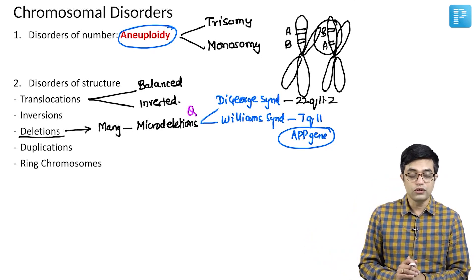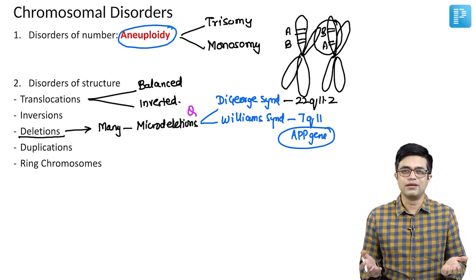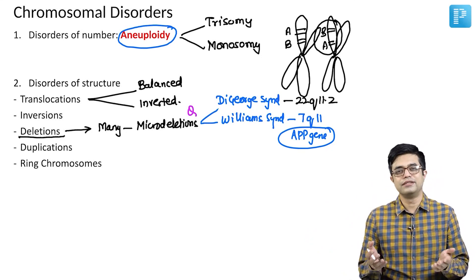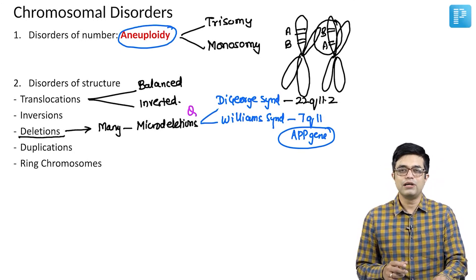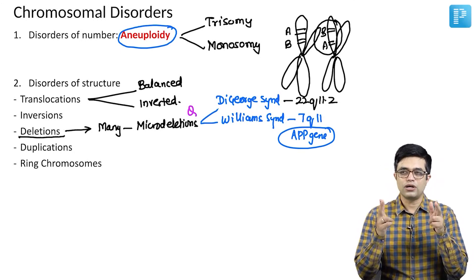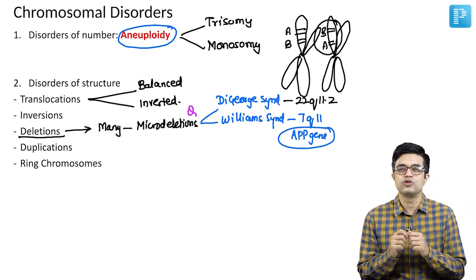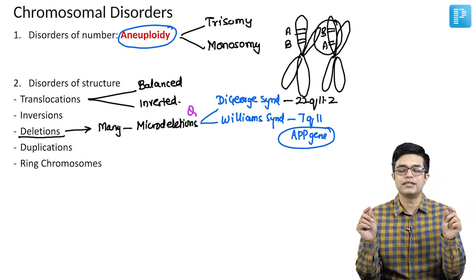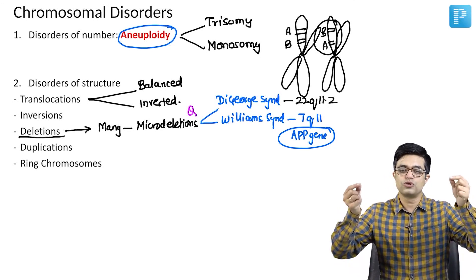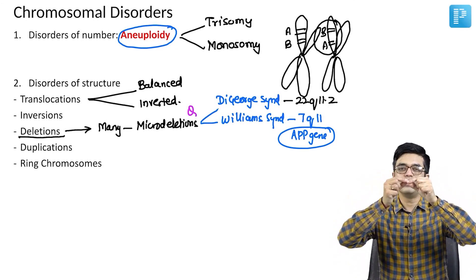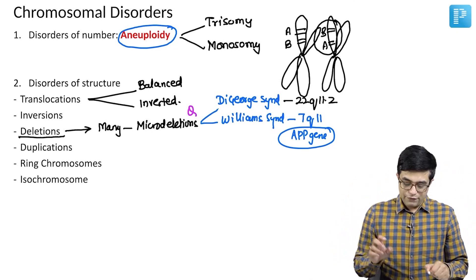Moving to ring chromosomes. As the name says, they are shaped like a ring. Whenever there is cutting of a chromosome or deletion at the end, sometimes sticky ends are produced and the P and Q chromosome arms can join to each other, producing the ring chromosome.